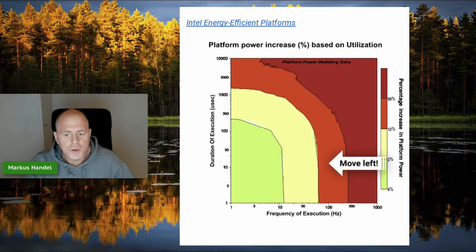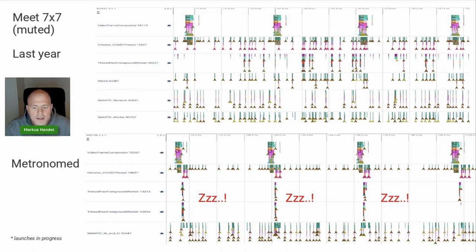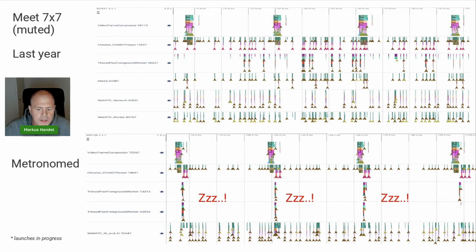Some careful profiling led to the introduction of the metronome and sync decoding projects. This is a before-and-after of a muted Meet 7x7 call — the 2021 state versus a metronome call with all bells and whistles. These are Perfetto traces showing about 100 milliseconds of activity from a subset of Chrome threads. In the old lane, there is activity everywhere, all the time — it's like an ant's nest. In the metronome lane, it looks much more clean, and it gives processors much more opportunity to enter sleep states and save power. Google is working really hard on bringing truly power-efficient RTC into your applications.